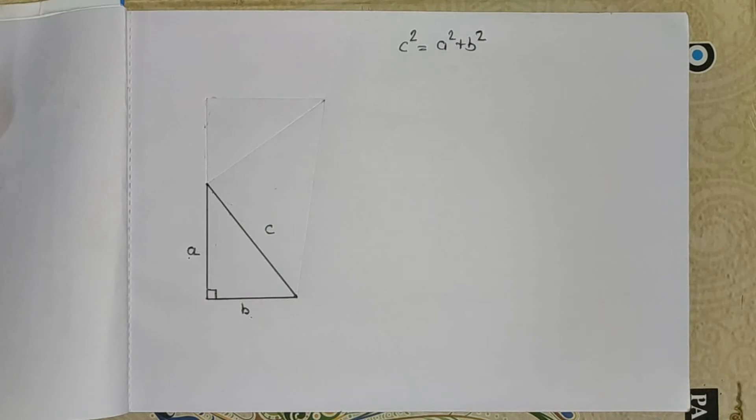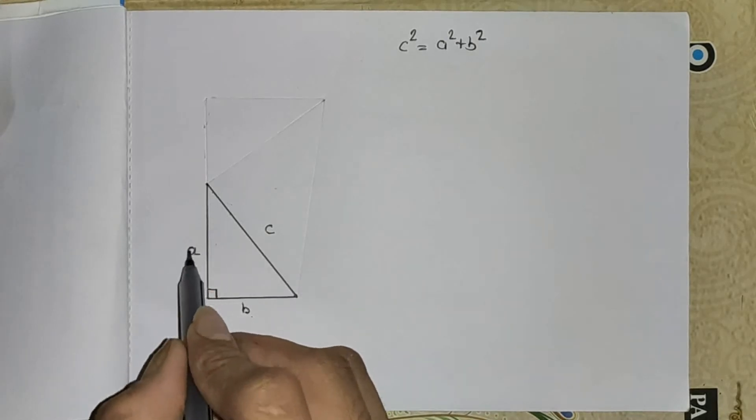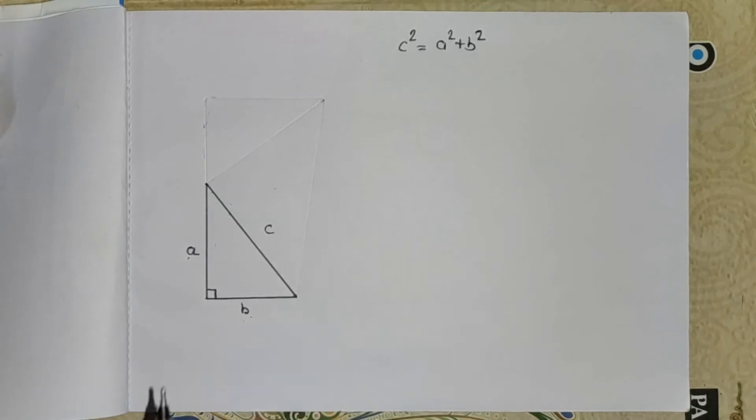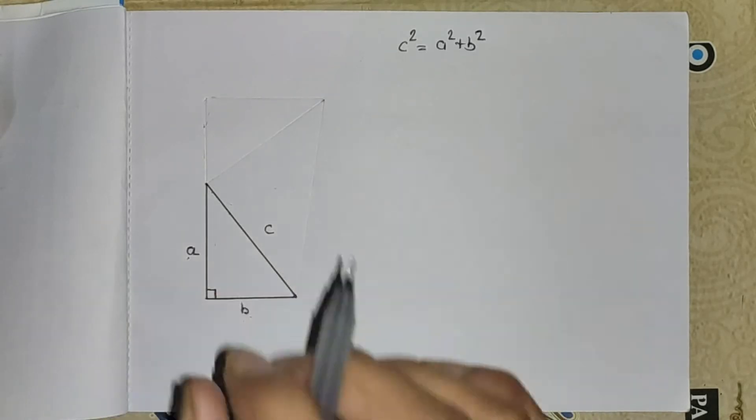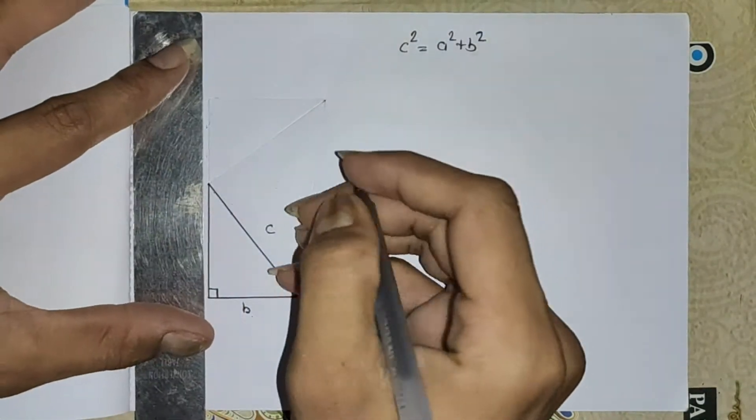We're using a very simple method. So here this triangle has three sides a, b, c. I make another triangle having the same sides.